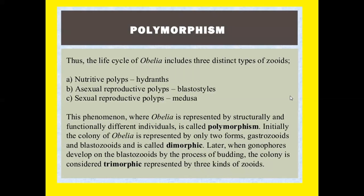Polymorphism: the life cycle of Obelia includes three distinct types of zooids — first, the nutritive polyps (gastrozooids); second, the asexual reproductive polyps (blastostyles); and third, the sexual reproductive zooids (medusae). This phenomenon where Obelia is represented by structurally and functionally different individuals is called polymorphism. Initially the colony of Obelia is represented by only two forms, gastrozooids and blastozooids, and is called dimorphic. Later, when the gonopods develop on the blastozooid by the process of budding, the colony is represented by three kinds of zooids. Thank you students — this is all about Phylum Cnidaria, type study Obelia.